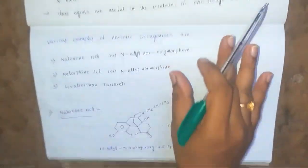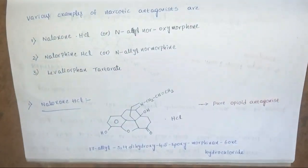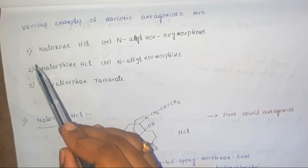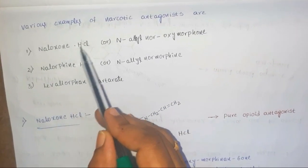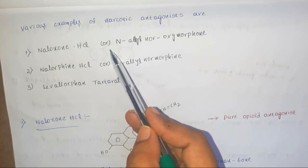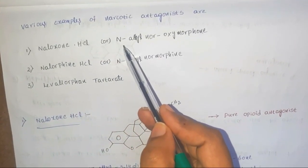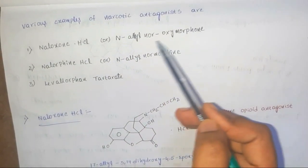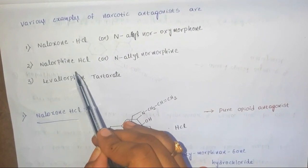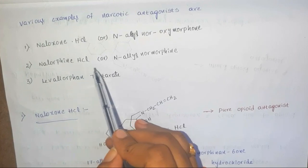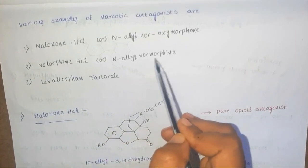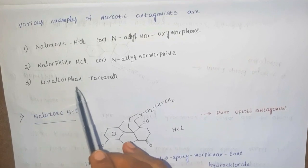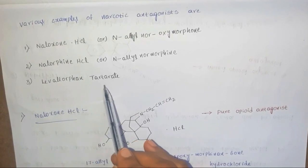Examples of narcotic antagonists included in our syllabus are: first, naloxone hydrochloride, also called as N-allyl nor-oxymorphone; second, nalorphine hydrochloride, also called as N-allyl nor-morphine; and third, levallorphan tartrate.